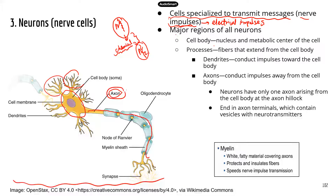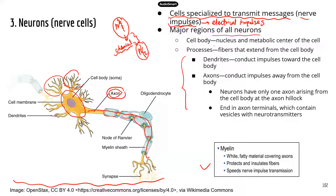Now we'll talk about the major regions of the neuron — you can get more details from the text. Another thing I want to mention: when you look at these axons, you probably notice there are some blue structures. Those are called myelin sheath, right here. Myelin sheath is a kind of fatty material that covers the axons, and it's very important because of its fatty nature — it serves as really good insulation.